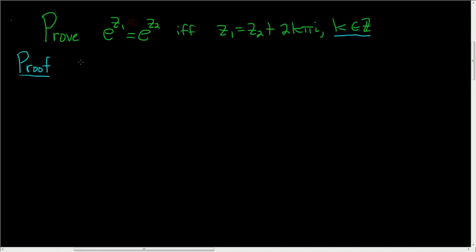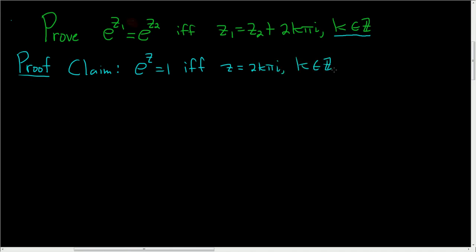In order to prove this, we're going to prove an intermediate result to make it a little bit easier. So the claim is that e to the z is equal to 1 if and only if z is equal to 2k pi i, where k is an integer. So let's carefully go through this proof. We'll start by supposing that e to the z is equal to 1.